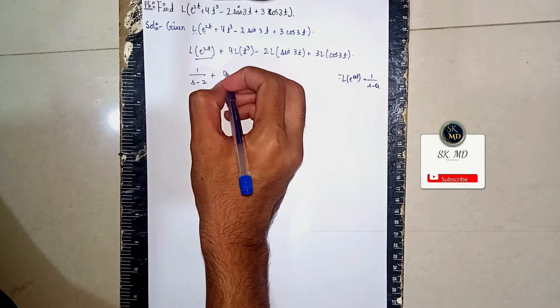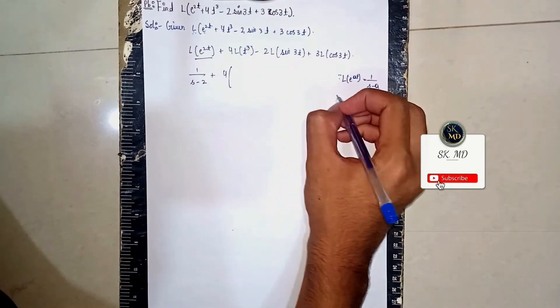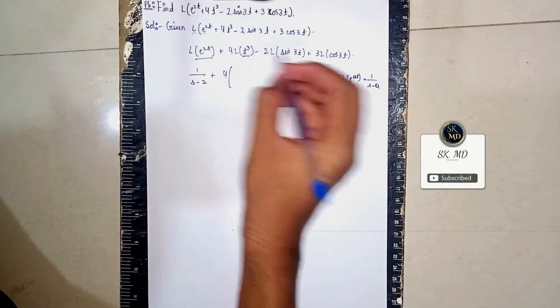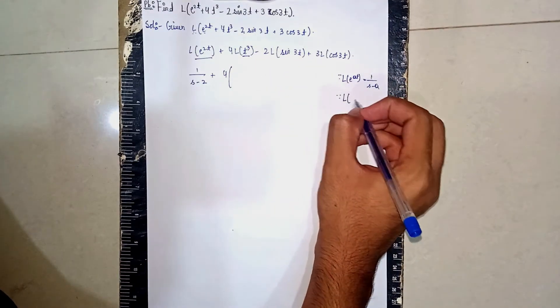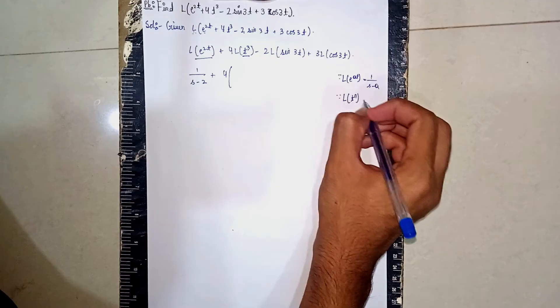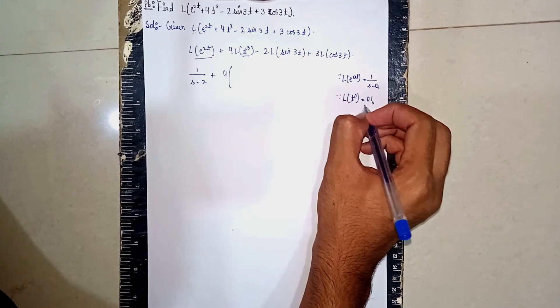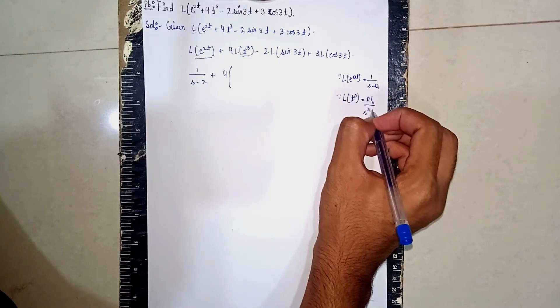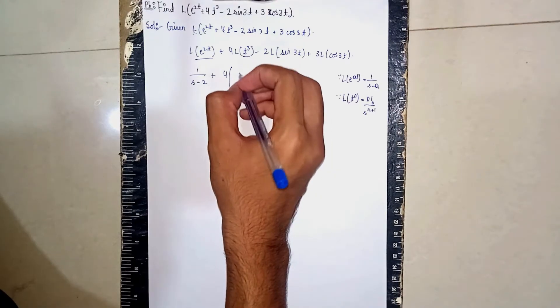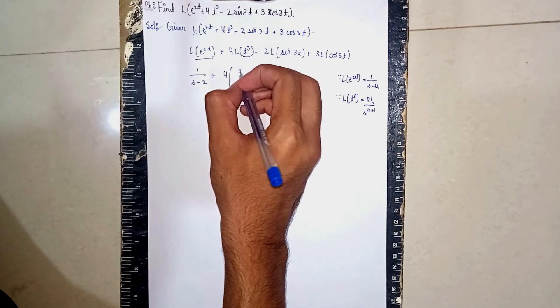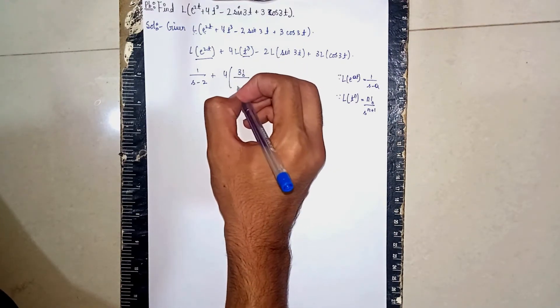Then plus 4, then open the bracket. Now here I am using another formula of Laplace: Laplace of t^n is n!/(s^(n+1)). So it becomes n is 3, so 3!/(s^4).